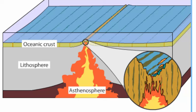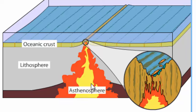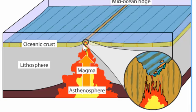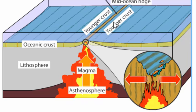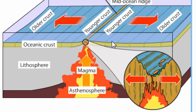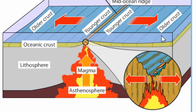Here we have a cutaway of the Earth showing the lithosphere at the top with oceanic crust and mantle, and the asthenosphere below. As we get deeper, the interior gets hot, rock melts into magma, and that magma erupts onto the surface. Once it hits the cold ocean water, it cools and forms new, younger crust. This younger crust pushes previously formed crust out to the sides away from the mid-ocean ridge, spreading the seafloor — with new crust forming at the ridge and old crust sinking back into the Earth.